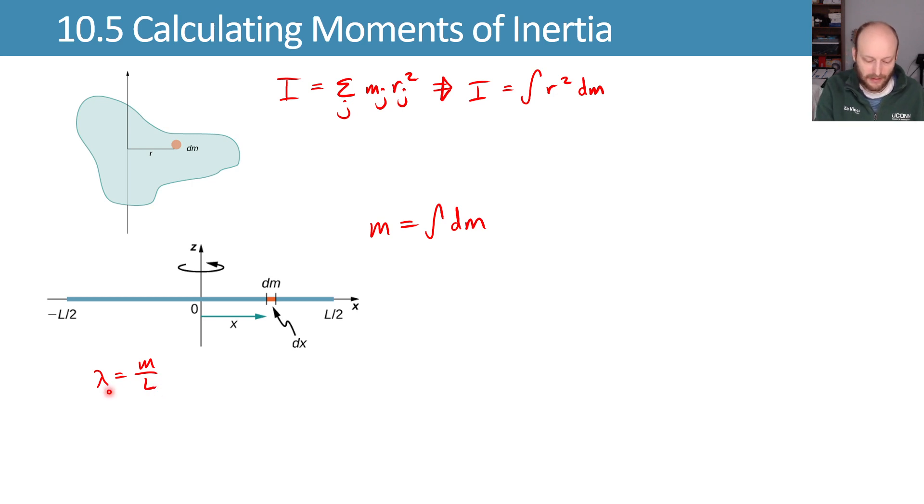That means that lambda equals m over L. It also equals dm over dx. We can rearrange that to say that dm is equal to lambda times dx.